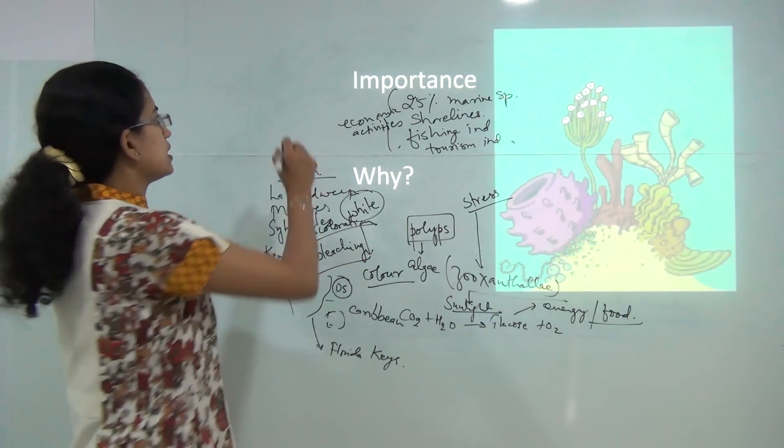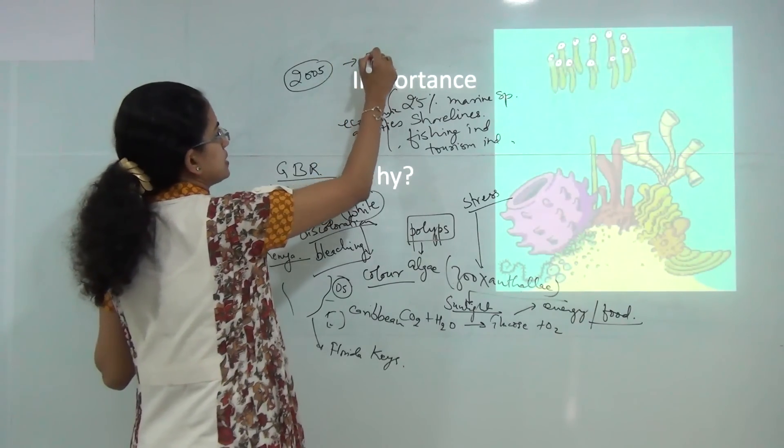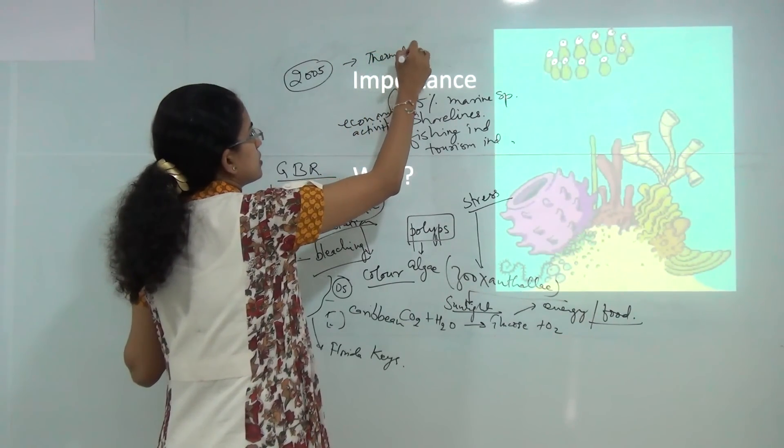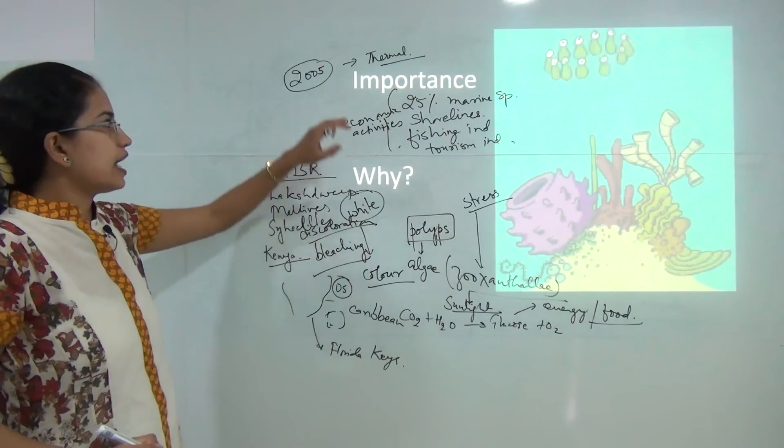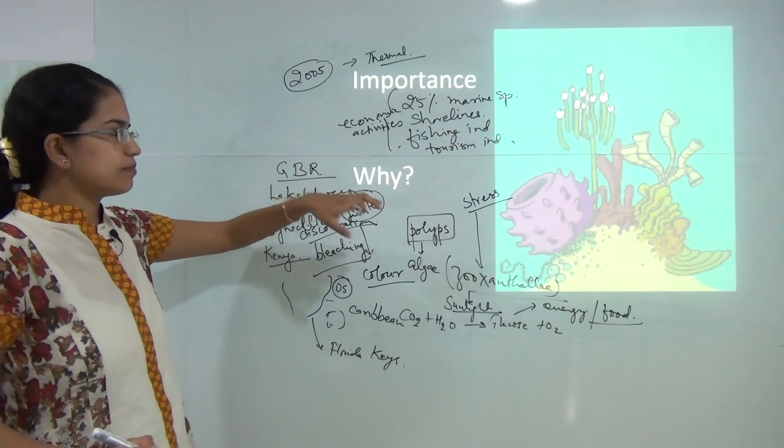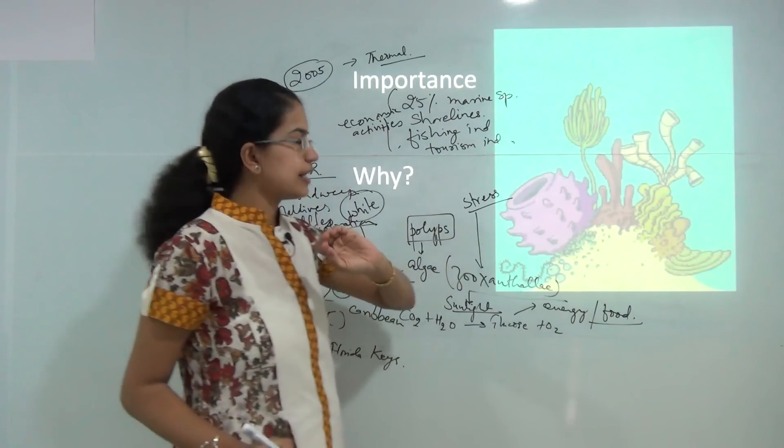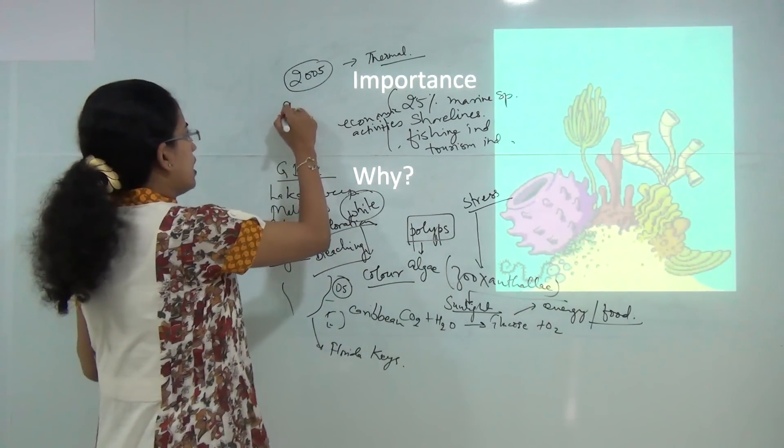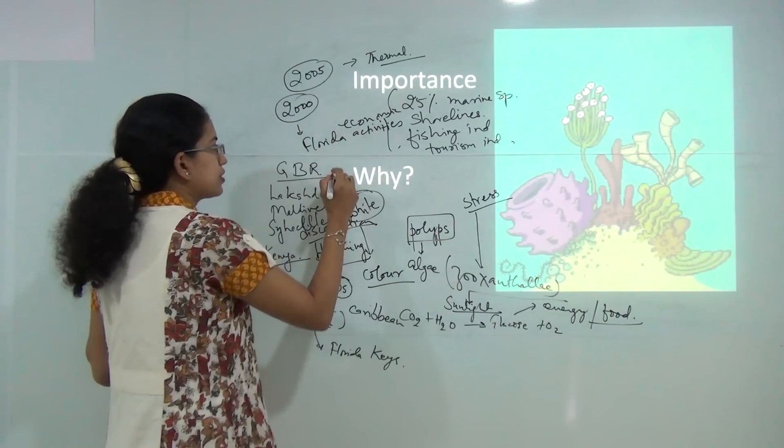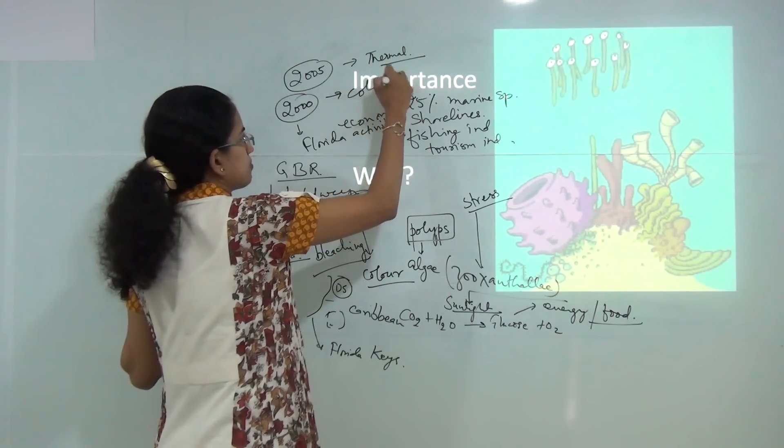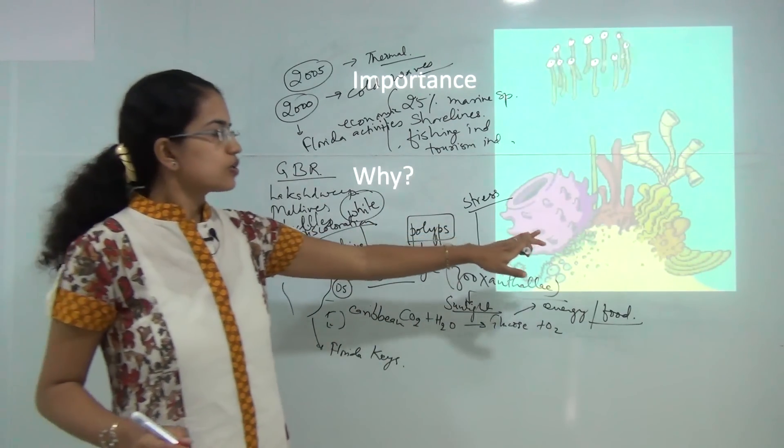There was an interesting study. In 2005 there was a thermal stress at the coast of United States towards the Caribbean sea and the Virgin island and due to the increase in the temperature there was a huge damage to the coral reef in that area. However, again in 2000 there was a study of the Florida Keys